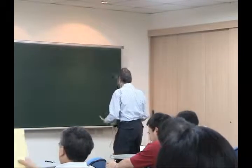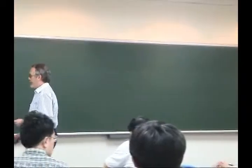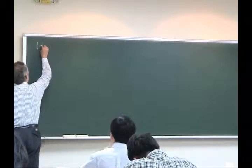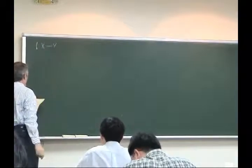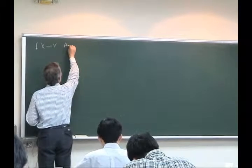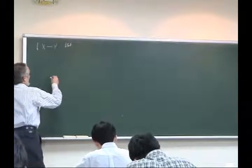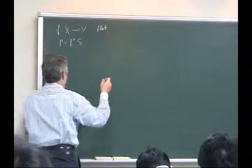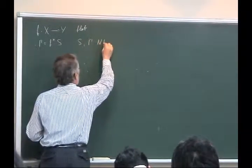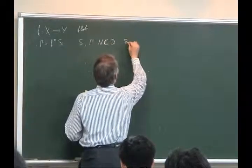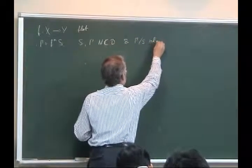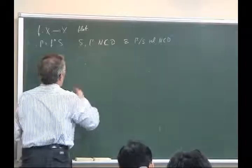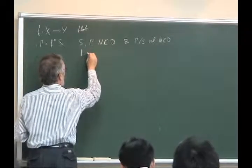Let me first recall the notations we studied last time. We have f from X to Y, assumed to be flat, and we considered gamma to be f upper star of S, with both S and gamma normal crossing divisors, and gamma over S a relative normal crossing divisor. We assumed gamma to be reduced, so we assumed f to be semi-stable.